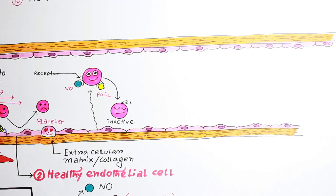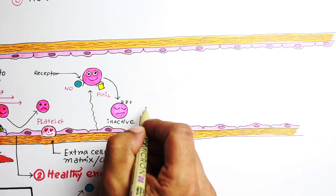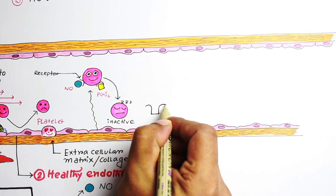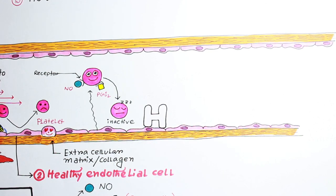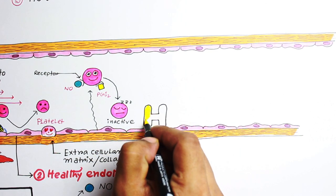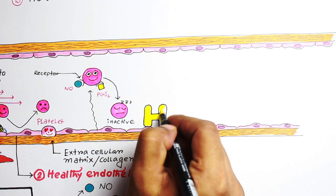Now let's see how they do this special function. As you know, heparin is a naturally occurring anticoagulant produced by basophils and mast cells. Healthy endothelial cells express heparin on their surface.